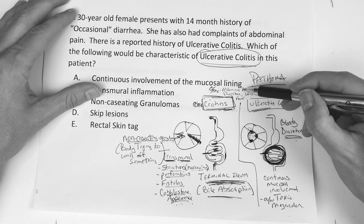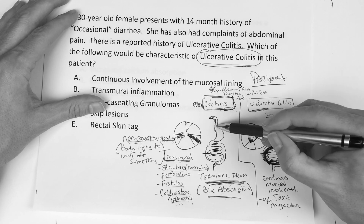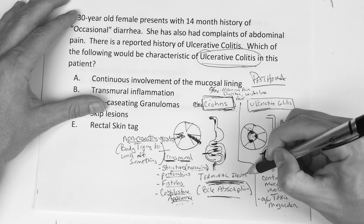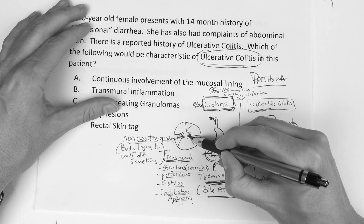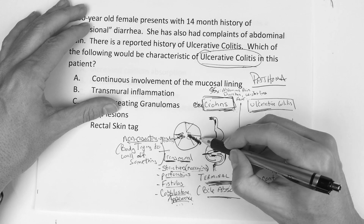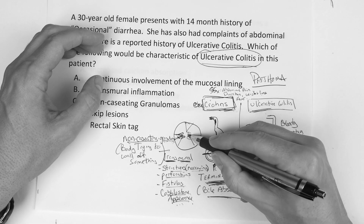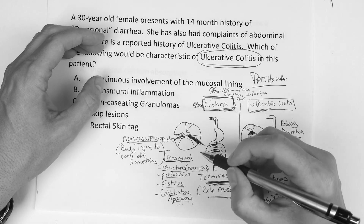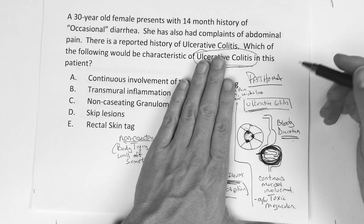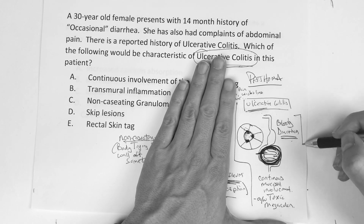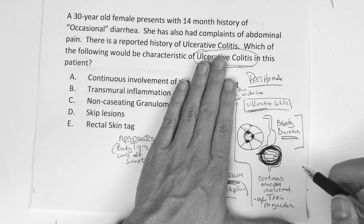So to summarize: both have the same symptoms — abdominal pain, diarrhea, weight loss, fever. But if you know the mechanism, Crohn's goes from tip to tip, mainly in the terminal ileum, inflammation is transmural, which creates cobblestone appearance, strictures/narrowing, perforated bowel, fistulas (connections), and non-caseating granuloma. For ulcerative colitis: think bloody diarrhea, continuous mucosal involvement, associated with toxic megacolon.